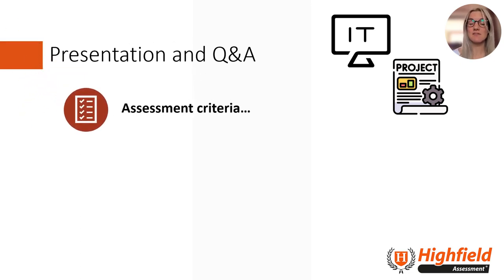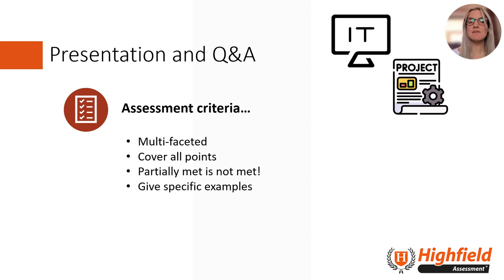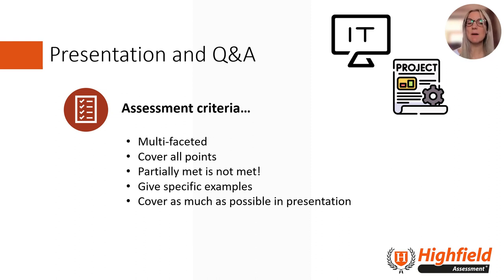The assessment criteria is multifaceted — there are a lot of points to cover and learners need to make sure they cover all of them. Unlike APO2, if one pass criteria is not met, that overall assessment method is failed. They need to be able to give specific examples, but timing is key and they need to cover as much as possible in the presentation. The more they cover in the presentation means the Q&A can be used to clarify, build on, and stretch the learner to distinction criteria if needed. Remember to carry out mocks with your apprentices, which will help build their confidence ready for the big day.